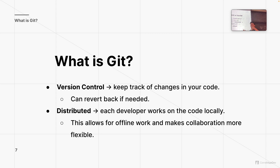Distributed means multiple developers can work on the same code locally, allowing for offline work. For those who've taken CS 1110, one major collaboration issue is sending zip files or coding over someone's shoulder. Git solves that by letting you collaborate on separate local devices while sharing the same source code repository on GitHub. That's why Git is such a powerful tool.